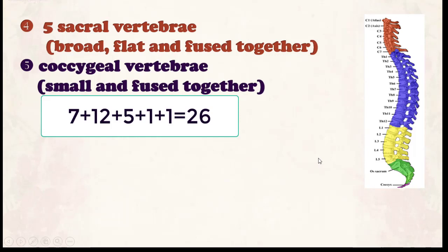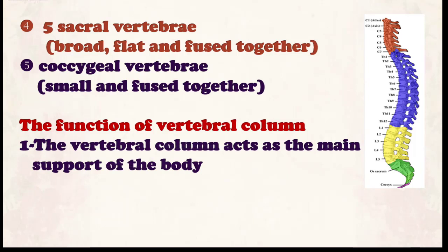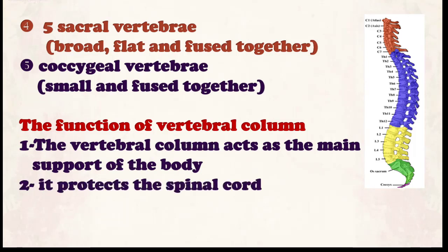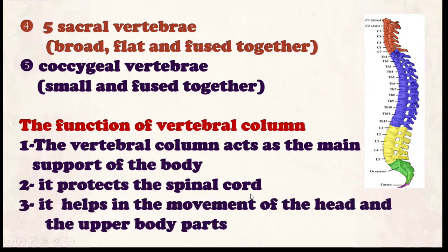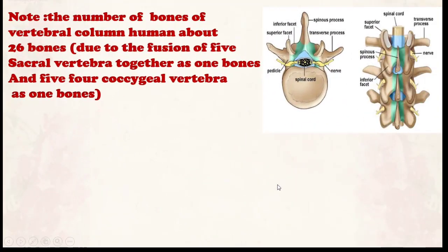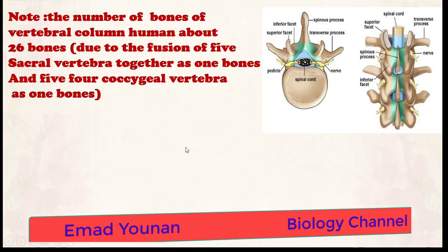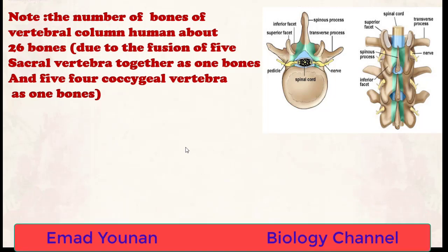The functions of the vertebral column: number one, it acts as the main support of the body. Number two, it protects the spinal cord, which lies inside it. Number three, it helps the movement of the body — movement of the head in any direction, movement of the upper parts, and movement of the lower limbs. Note: the number of bones in the vertebral column is 26, due to the fusion of the five sacral vertebrae as one bone and the four coccygeal vertebrae as one — giving a total of 26.